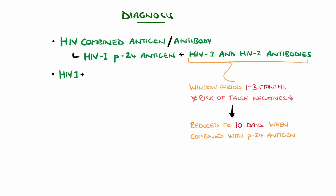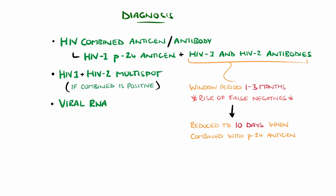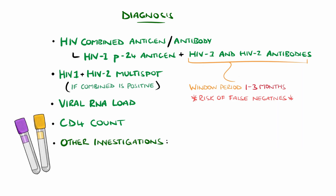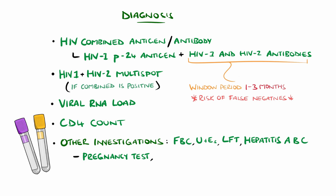The Western blot test was previously used to confirm a positive ELISA, but more recently the HIV-1 and 2 antibody multi-spot test has largely replaced this to differentiate the subtype. Other tests include HIV viral load detecting levels of HIV-RNA, CD4 counts, full blood count, urea and electrolytes, liver function tests, as well as hepatitis A, B, and C. Pregnancy testing, sexually transmitted infection screening, and urinalysis are also recommended.